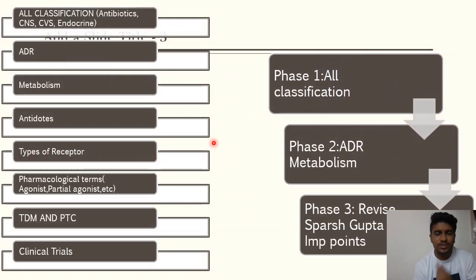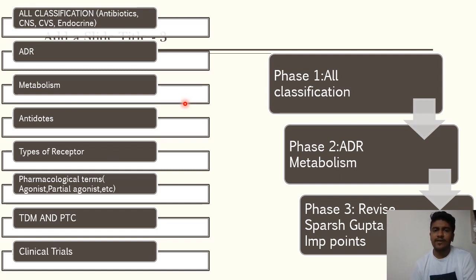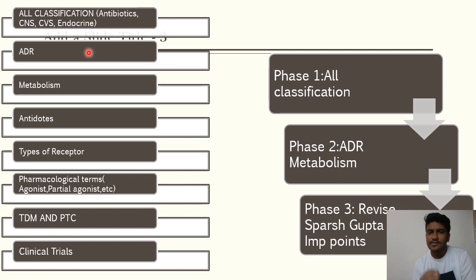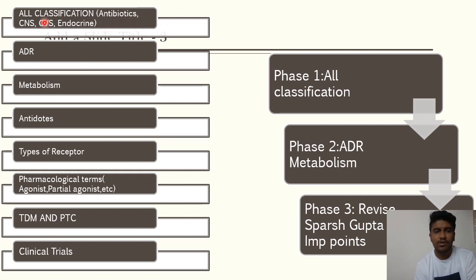In Pharmacology there are many things to study, but what should be prioritized first? All classifications should be at the tip of your tongue. If you analyze previous year 10-year question papers for GPAT, you'll see that questions have been asked from classifications — especially antibiotics, cardiovascular systems, CNS systems, and endocrine systems.